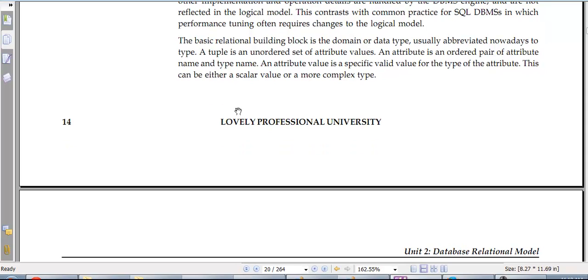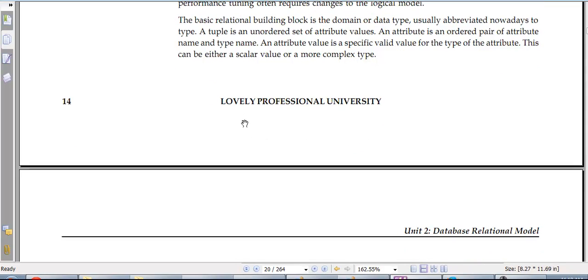The basic relational building blocks are the domain or data type, usually abbreviated nowadays to type. A tuple is an unordered set of attribute values. An attribute is an ordered pair.